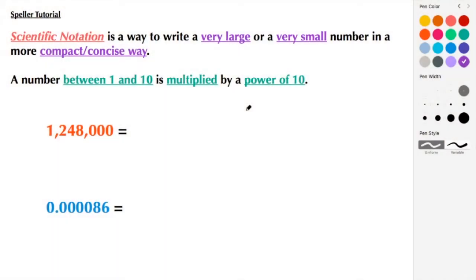Welcome back to Speller Tutorial Services. If you find today's tutorial useful, please like, subscribe, and/or share it. Today we're going to learn about scientific notation. Scientific notation is a way to write a very large or a very small number in a more compact or concise way.